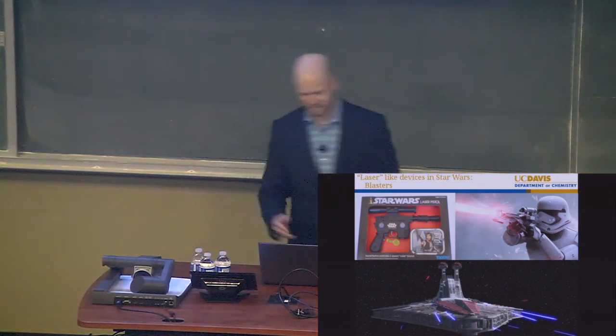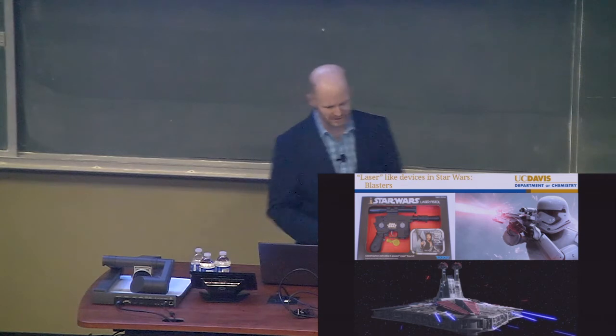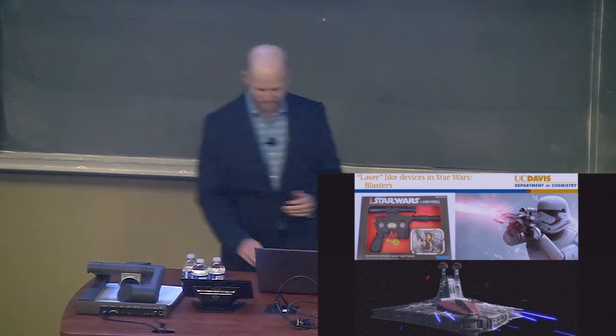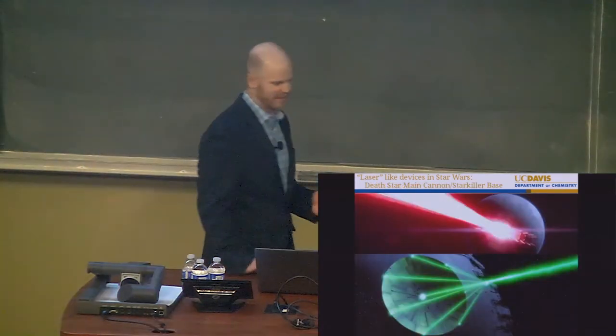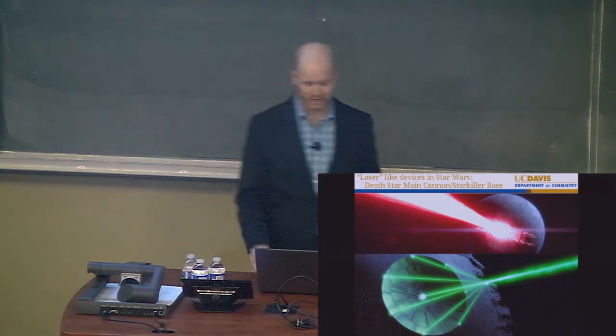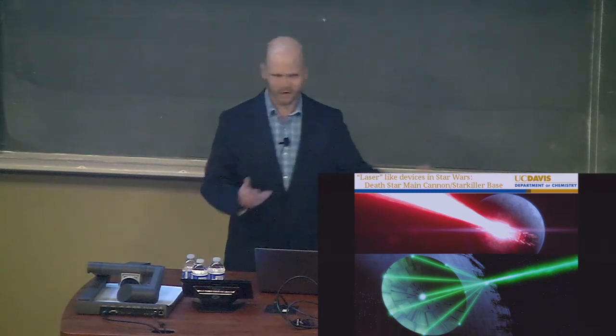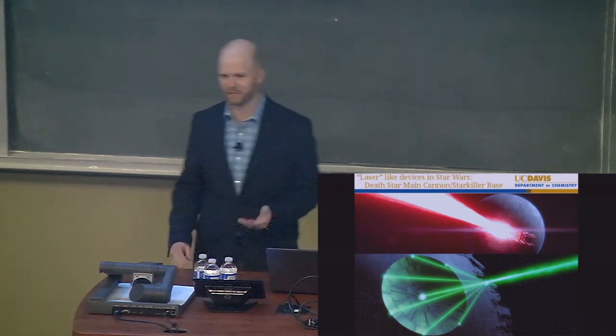We've got blasters, featured here by a stormtrooper, this ship down at the bottom with plenty of blasters, and even this laser pistol device that was marketed to kids in the 1970s. We've got the lightsabers modeled here by a few different generations of filmmakers, and we've got the iconic Death Star with its main cannon, and in the newer iteration of the Star Wars movies, the Starkiller base. So all of these devices look kind of like they could be lasers. They're all light, shiny things that are going in straight lines, and we know that laser pointers basically do that.